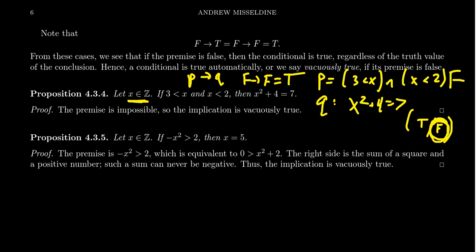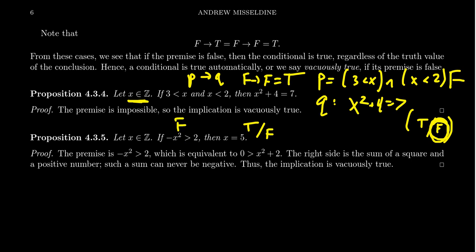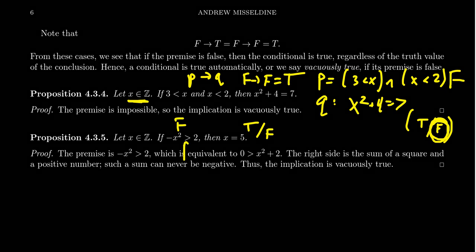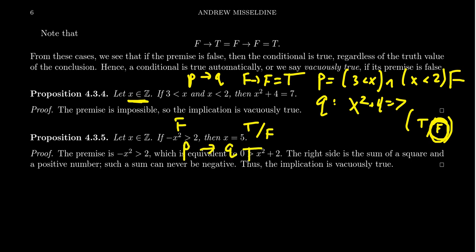Another example: let x be an integer, and suppose −x² > 2; then x = 5. The conclusion could be true if x = 5 or false otherwise. But the hypothesis '−x² > 2' is always false: squaring any integer gives a non-negative number, negating it gives something non-positive, so −x² is never greater than 2. Therefore the implication P implies Q is a true statement — it's vacuously true — and that is the proof.